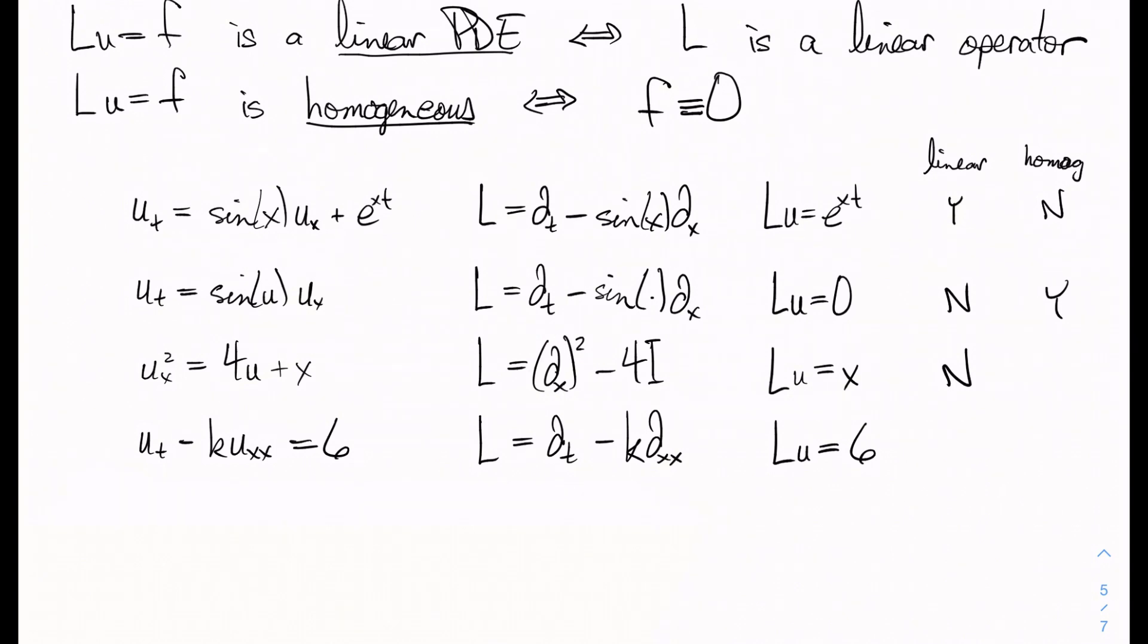And in the last one, we have something which is linear here, and it is not homogeneous because we have a six instead of a zero here.